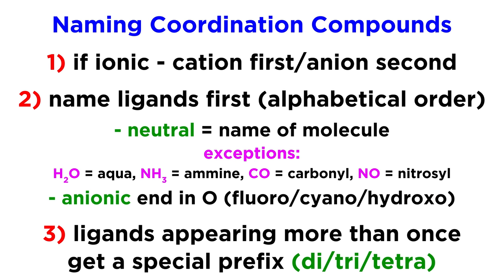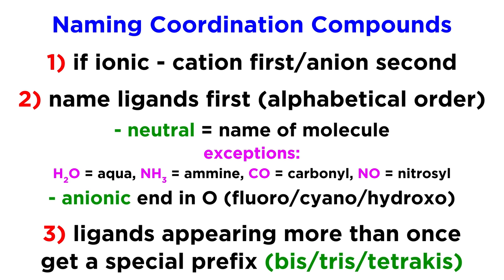The third and final rule is that if a particular ligand appears more than once in a coordination compound, we must specify this using a special prefix indicating the number of times it appears. Sometimes these prefixes are modified if the ligand itself begins with one of those prefixes, or a vowel, so as to remove ambiguity, resulting in the prefixes bis, tris, and so forth.